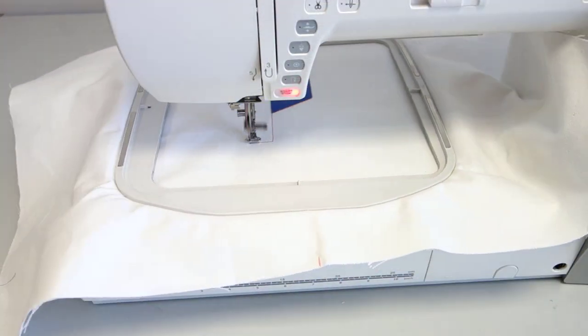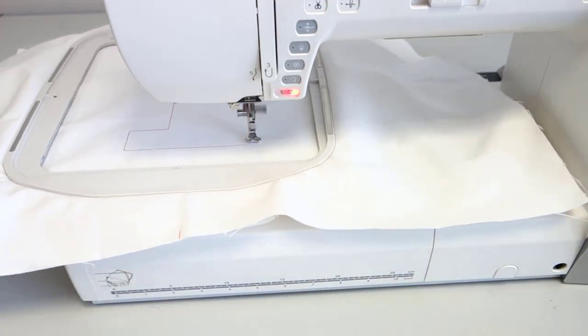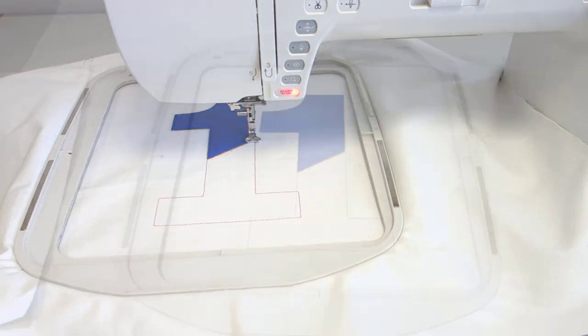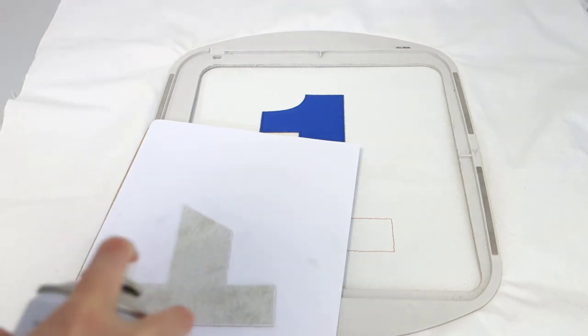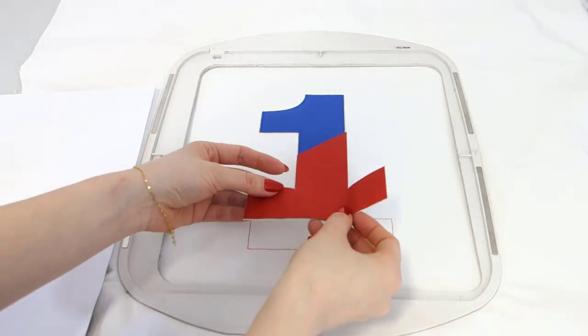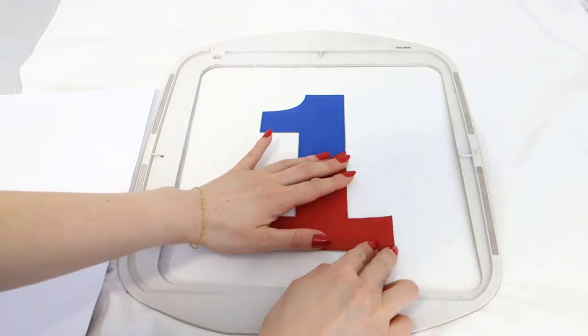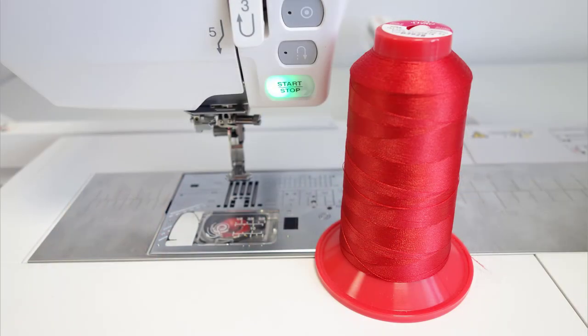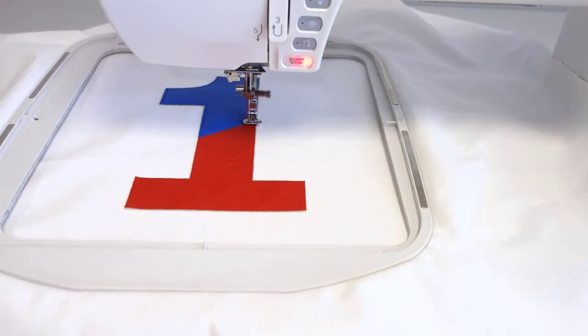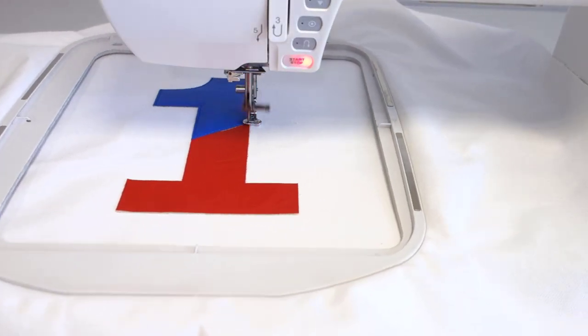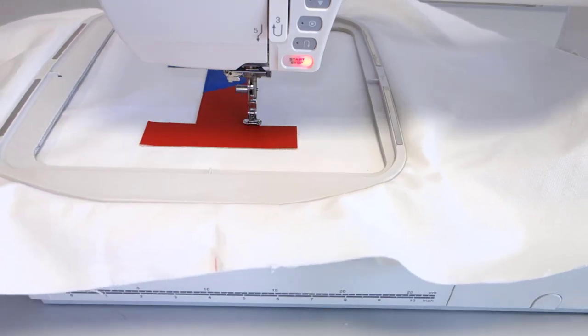Continue with a guide stitch for the other part of the applique. Remove the hoop from the machine once again and carefully attach the second applique to the base fabric. Set the thread to the same color as the other applique fabric. Attach the hoop to the machine and go with the holding stitches of the second applique part.